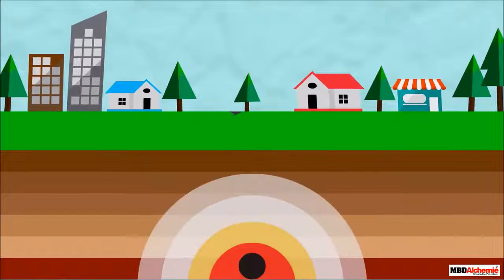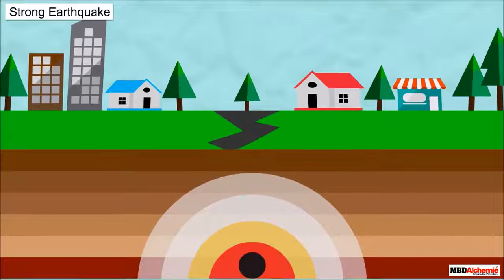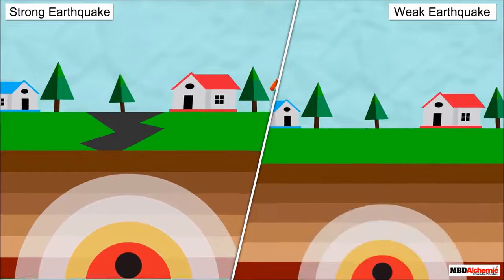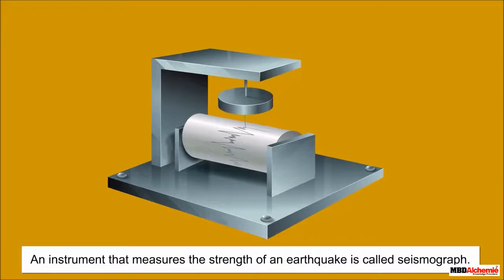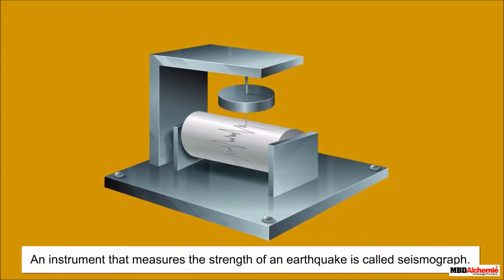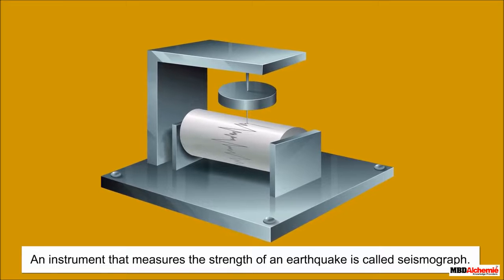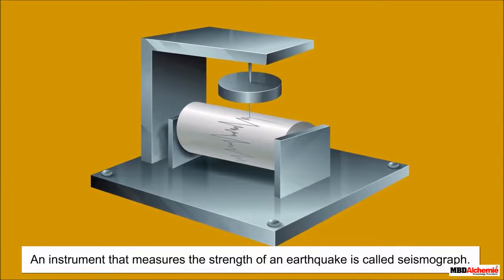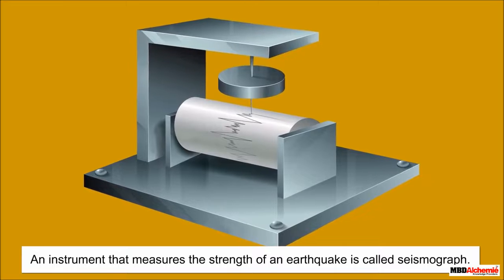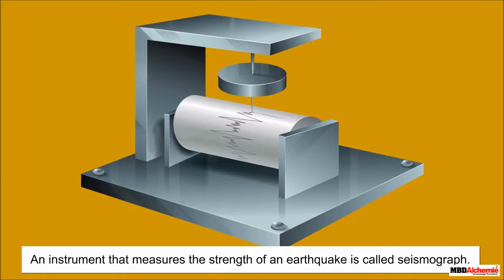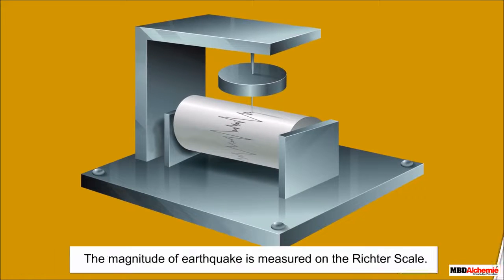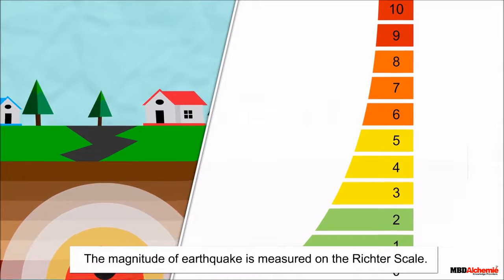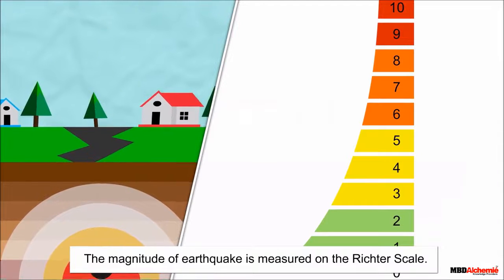Sometimes the earthquakes are strong, while sometimes they are weak. There is a special instrument that is used to measure the strength of an earthquake. This instrument is known as a seismograph. The magnitude of the earthquake is measured on the Richter scale.